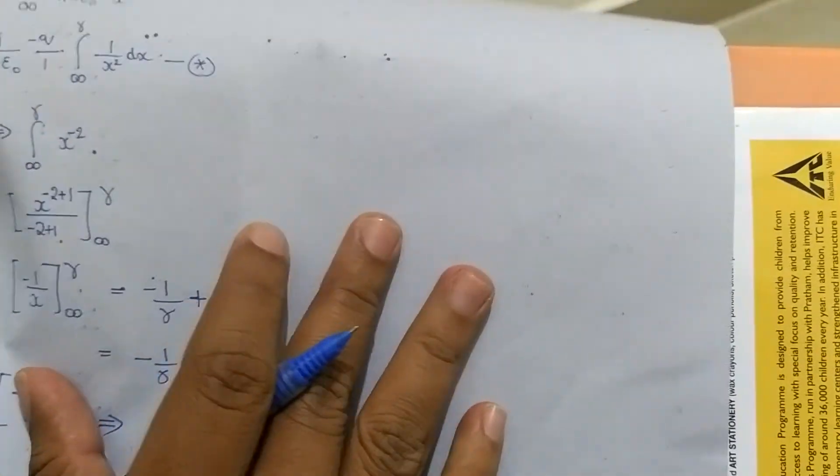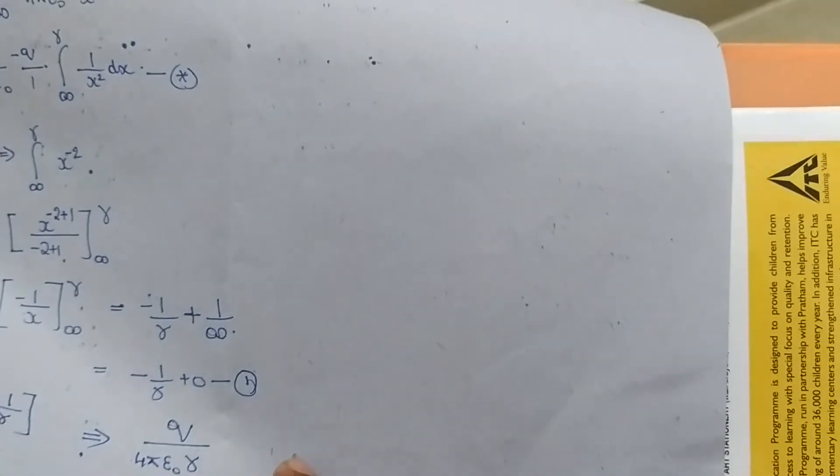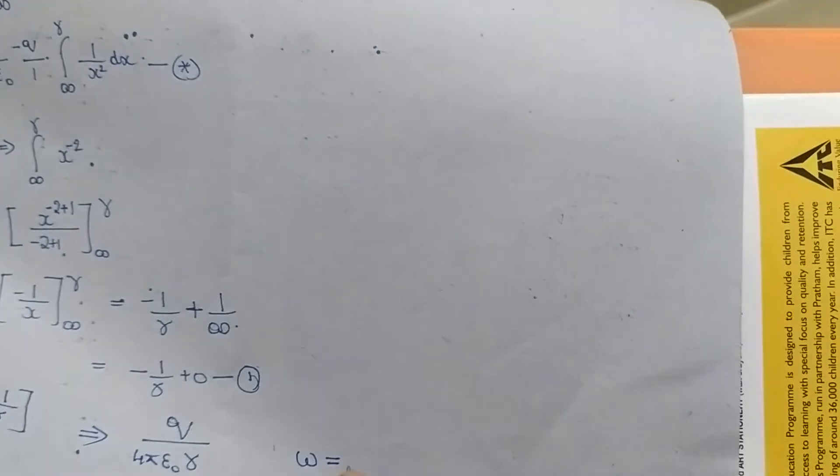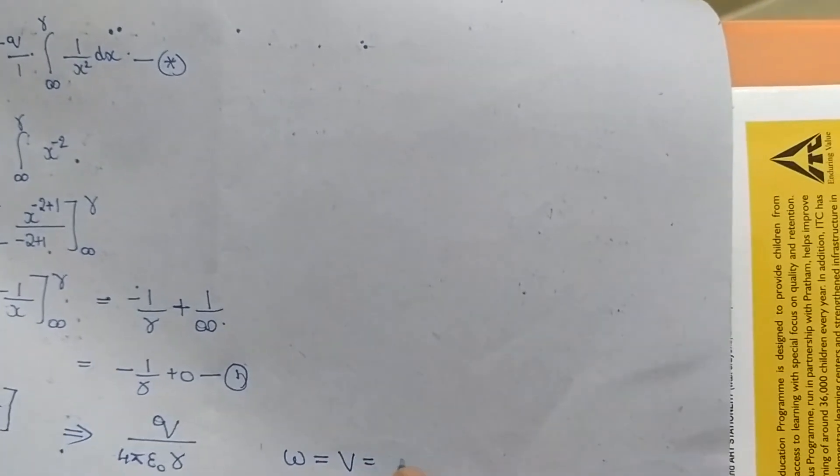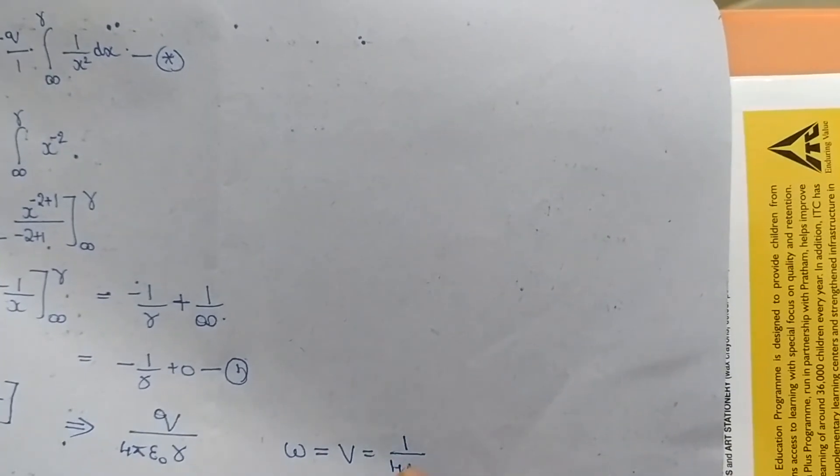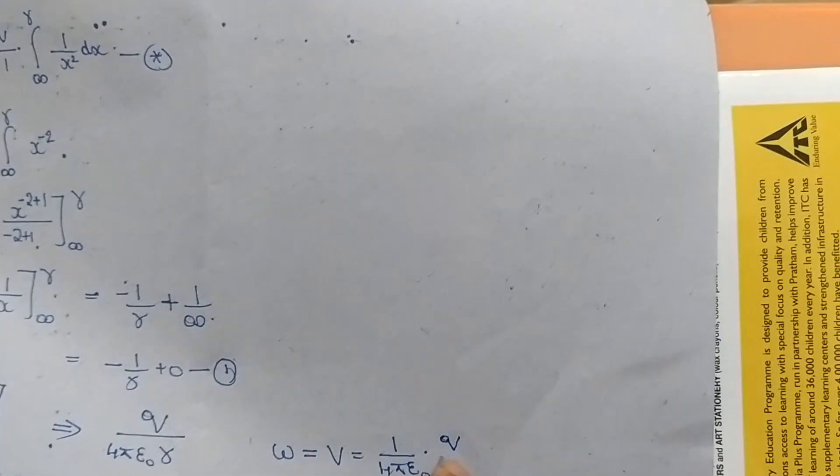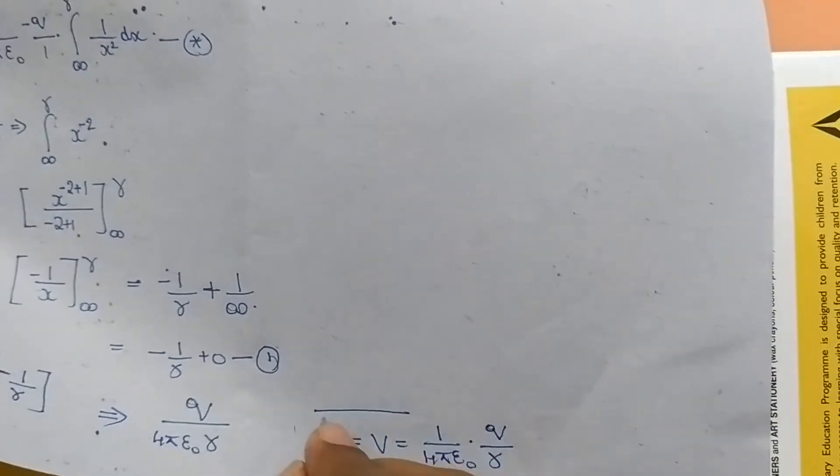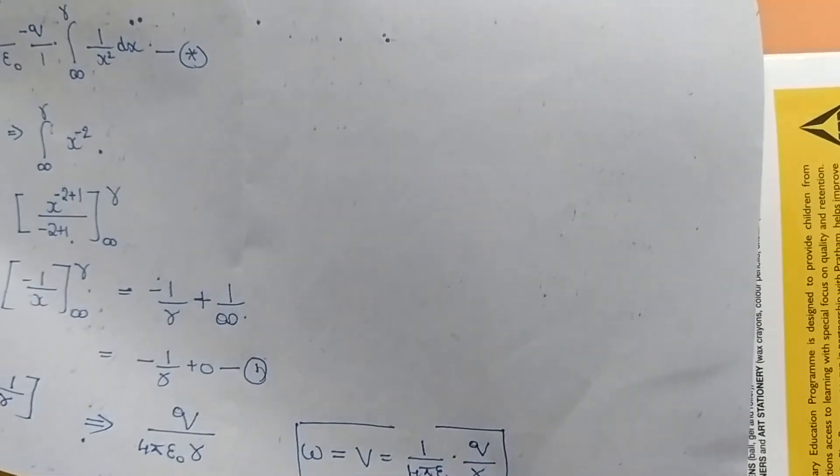This is what we are requiring for work done, which is equal to potential, which is equal to 1 by 4πε₀ into Q by r. This is the required equation we are searching for.